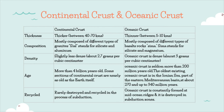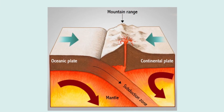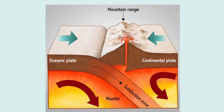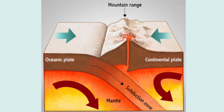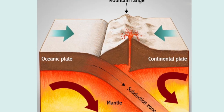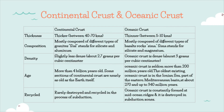The first parameter is thickness. The continental crust is much thicker — it is between 40 to 70 kilometers. However, the oceanic crust is only 5 to 10 kilometers thick.